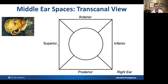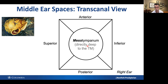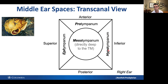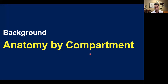Here's a schematic of the middle ear compartments. I like to think of it with a simple shape — a box with a circle in it and some diagonals. Straight in the middle you have the mesotympanum, which is what you see directly deep to the eardrum. Superior to this is the epitympanum, which contains most of the ossicular mass. Anteriorly is the protympanum, which contains the eustachian tube. Inferiorly is the hypotympanum, which contains the jugular bulb. And then posteriorly is the retrotympanum, which is the most complicated spot. We'll now march through compartment by compartment for the rest of the talk.